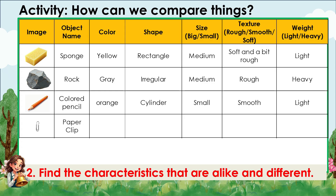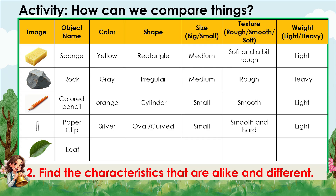For the paper clip: the color is silver, the shape is oval and curved, the size is small, the texture is smooth and hard, and the weight is very light. For the leaf: the color is green, the shape is flat and oval, the size is medium, the texture is smooth or veiny, and the weight is very light.